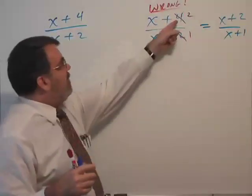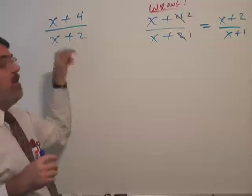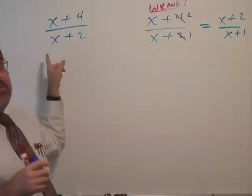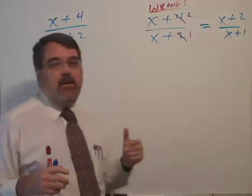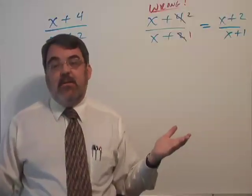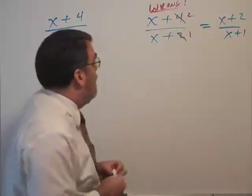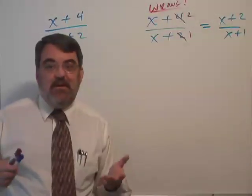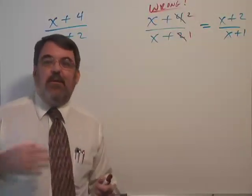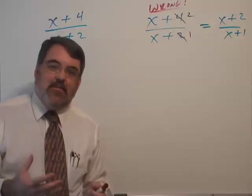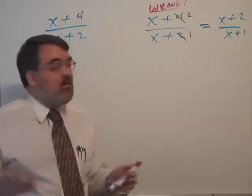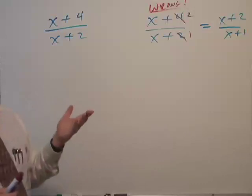In other words, I can't factor a two out of x plus four. I can't factor two out of x plus two. And so if I could factor twos out, then two would be a common factor instead of a common term. Now I want to persuade you why this is absolutely wrong. In order to be correct, the simplification has to work every time, regardless of what number x is.